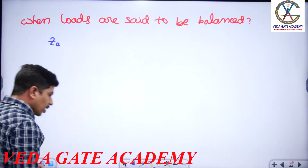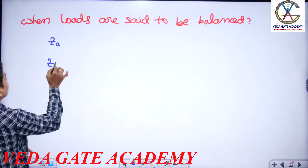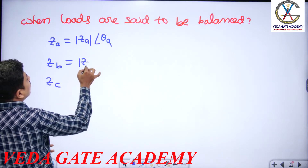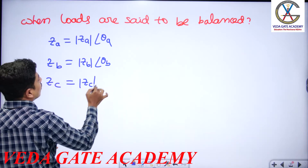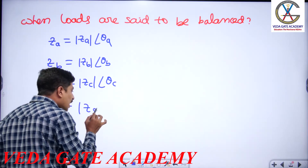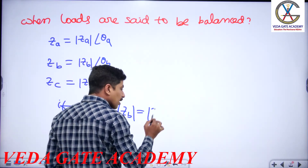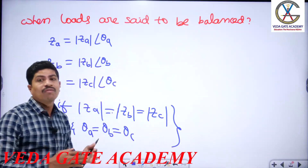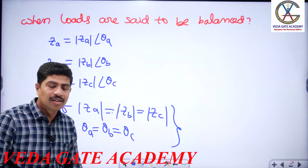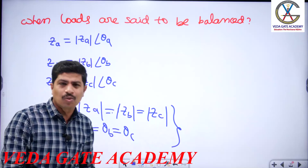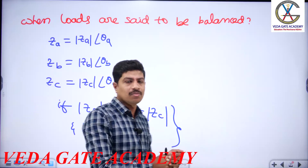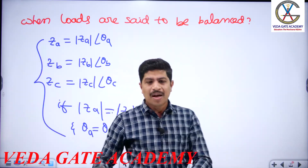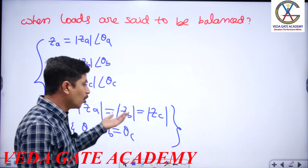Suppose we take impedance loads: ZA is impedance of phase A, ZB of phase B, ZC of phase C. If |ZA| = |ZB| = |ZC| and the angles θA = θB = θC, then this system of load is said to be balanced. This is the condition for balanced impedance load.